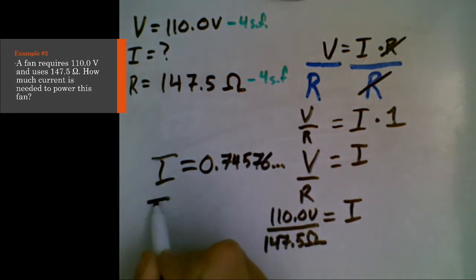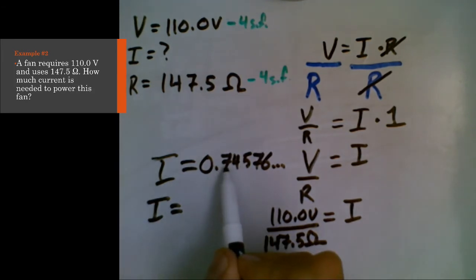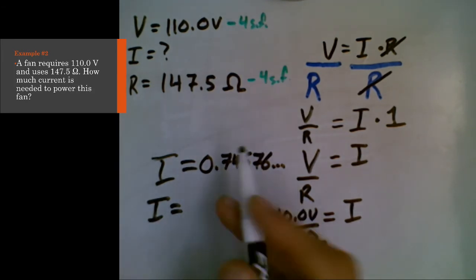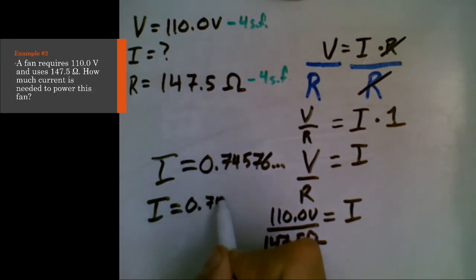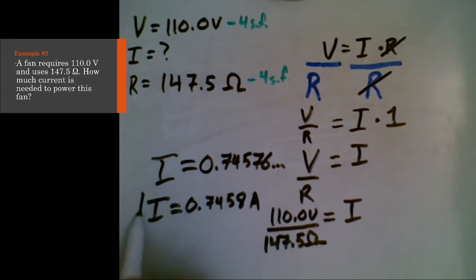We need four significant figures. So what that means is we're going to keep the 7, the 4, the 5, and the 7. And then we're going to have to round. The units also we need to include, those are amps because it's a current. So 0.7458 amps.